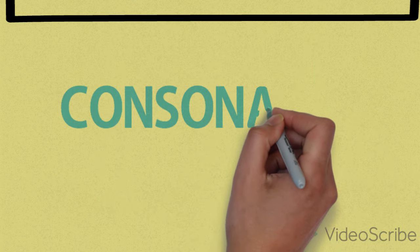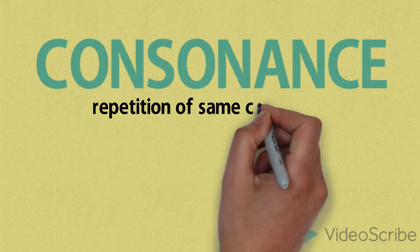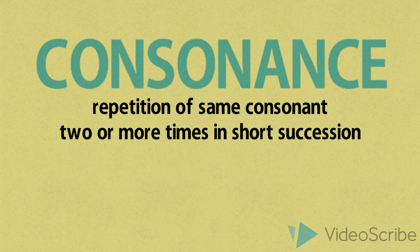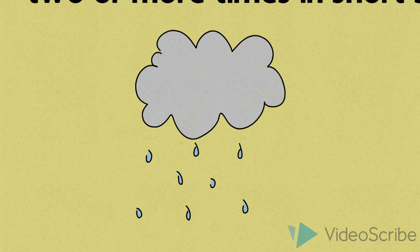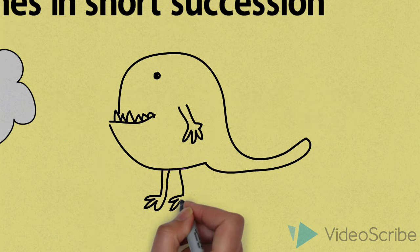Consonance. Consonance is characterized by the repetition of the same consonant two or more times in short succession. Examples are pitter-patter or all mammals named Sam are clammy.